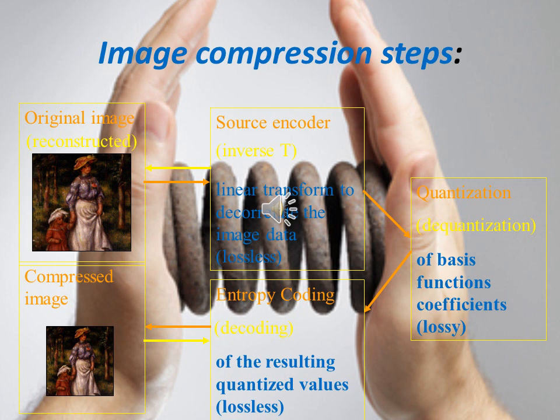These are the steps to be followed as part of the image compression process. First, the original image is sent to the source encoder unit. Quantization is the process of compressing a range of values to a single quantum value. When the number of discrete symbols in a given stream is reduced, the stream becomes more compressible. For example, reducing the number of colors required to represent a digital image makes it possible to reduce its file size. There are two types of quantization: color quantization and frequency quantization.